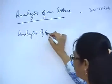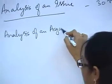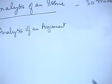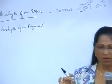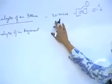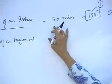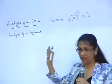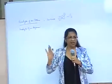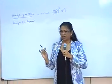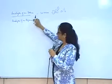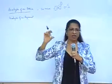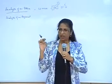Every task comes with a timer and each task gives you 30 minutes. Suppose you complete your issue task in 25 minutes — you cannot take that extra 5 minutes and give it to your argument. The timer is 30 minutes. Similarly, suppose you want to take more time for the issue by borrowing time from the argument — you cannot do that. Every task is a timed one and you have to finish writing within the 30 minutes.